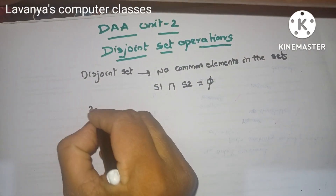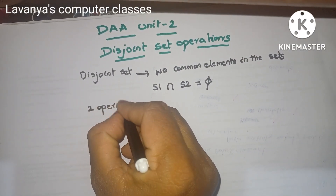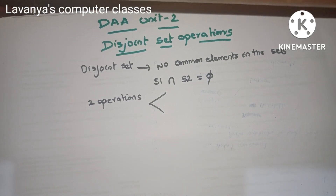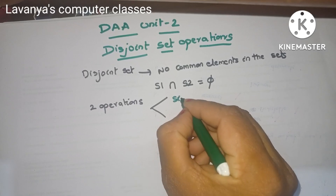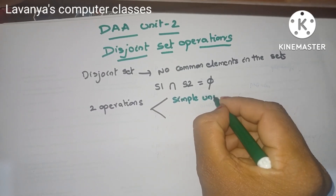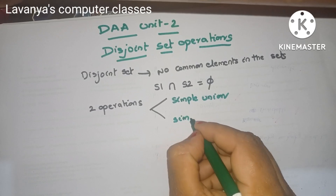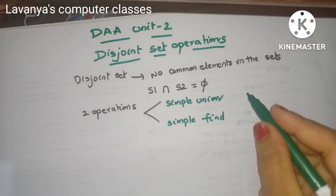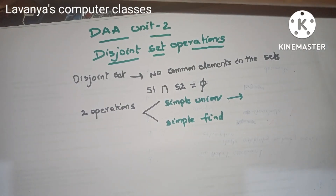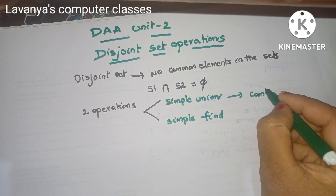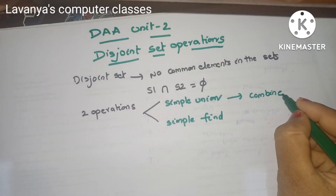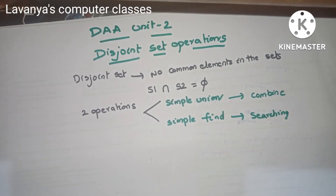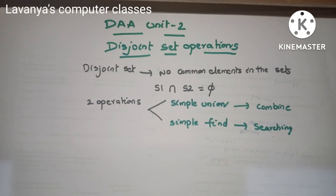In disjoint sets, we perform two operations. The first operation is Simple Union, and the second one is Simple Find. Simple Union means combining all elements from all sets. Simple Find means searching for an element in the given set. These two operations are performed on the disjoint set.